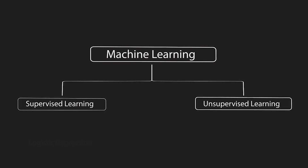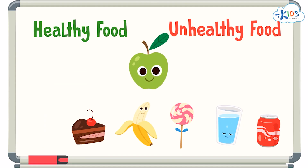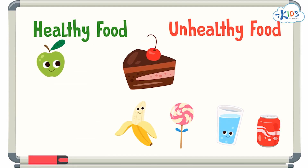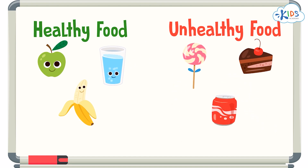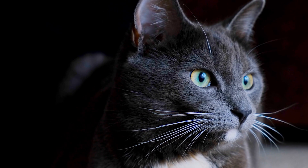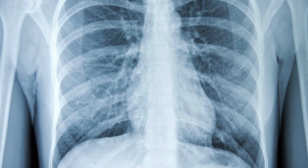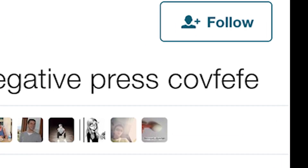Logistic regression is a fundamental supervised machine learning algorithm used for binary classification. Binary classification is the task of saying whether something belongs to a category or not. For example, saying whether an image contains a cat or not, whether an x-ray shows a cancerous tumor or not, or whether a tweet has inflammatory speech or not.